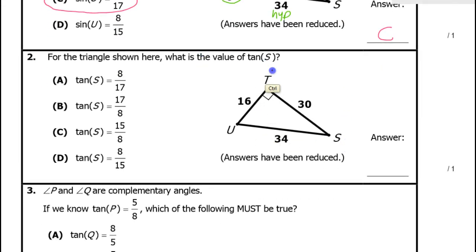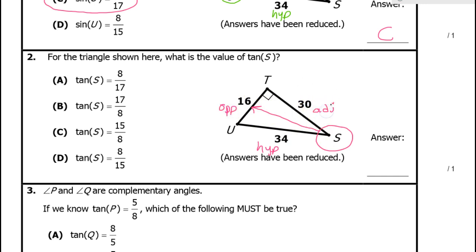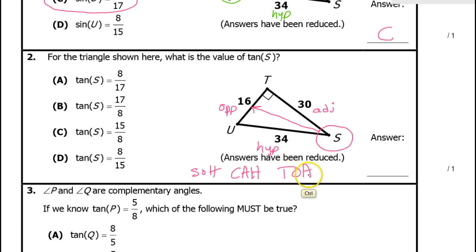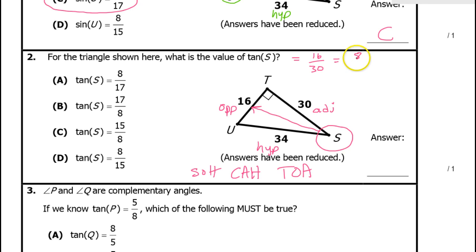For the tangent of angle S, we circle angle S and label the sides: this is the hypotenuse, across from angle S is the opposite leg, and right next to it is the adjacent leg. Tangent is opposite over adjacent, so that's 16 over 30. Both are even, so half of 16 is 8 and half of 30 is 15 — giving us 8 over 15. The answer is D.